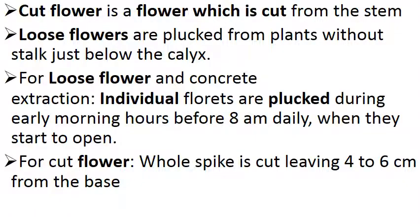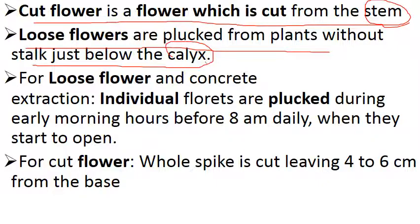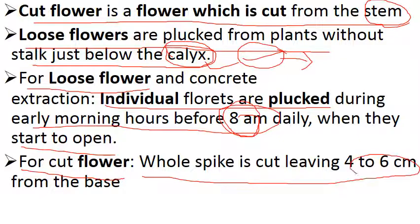In this slide we will clarify cut flower and loose flower properly. A cut flower is a flower which is cut from the stem — there must be a stem. In the case of a loose flower, it is plucked from plants without a stalk, just below the calyx. You should know about calyx and corolla: corolla is the colorful part, and the individual unit is called a petal; calyx is the green part, and the individual unit is called a sepal. For loose flowers, individual florets are plucked during early morning before 8 a.m., when they start to open. For cut flowers, the whole spike is cut leaving 4 to 6 cm from the base.